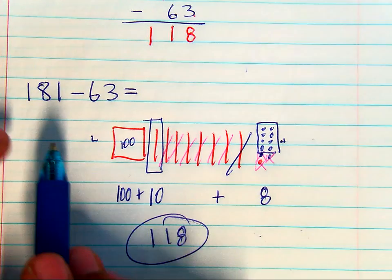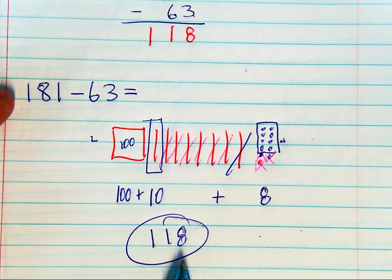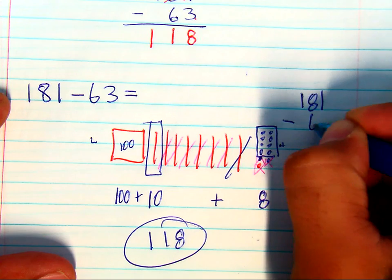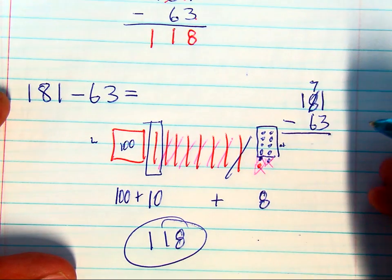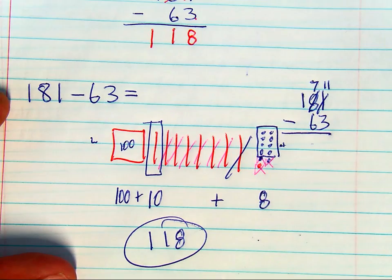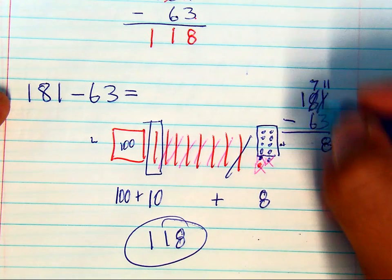And this should never be expected to be done on a test. This, 181 minus 63, taking 10 away and giving it to the ones place, that's the shortcut that's going to allow students to solve subtraction quickly on a test.